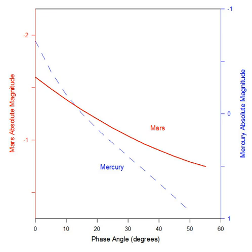The phase curve of the Moon approximately resembles that of Mercury due to the similarities of the surfaces and the lack of an atmosphere on either body. Clementine spacecraft data analyzed by J. Hillier, B. Bharati, and K. Hill indicate a lunar opposition surge. The Moon's apparent magnitude at full phase is −12.7, while at quarter phase it is less than 10% as bright.